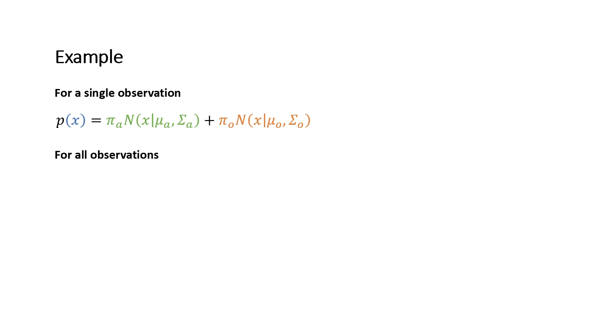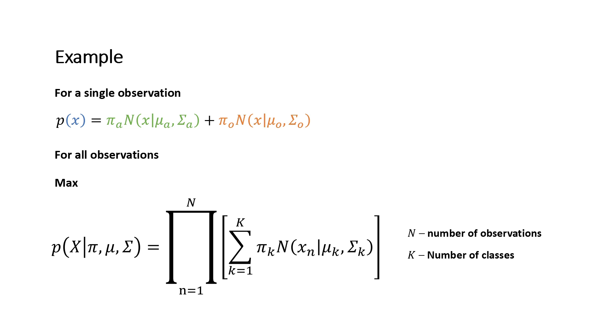So for all observations we have the following formula, where big N here is the number of observations and big K is the number of classes. Within the brackets we simply have the probability of observing a single observation x like we can see in the formula above. Now we simply multiply the probability of observing each data point together to get the probability of observing all of our data points.